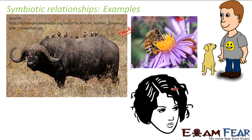If lice are present in your hair, they keep sucking blood from the skin, so the lice get benefited. But the human being is losing blood. The lice live on the other organism — so this is an example of ectosymbiosis.